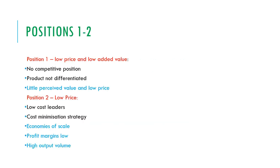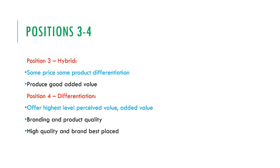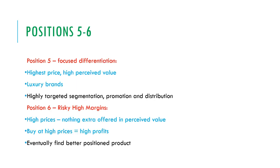In position 1, with no price premium and no added value, you're not in a competitive position — products are not differentiated, with low perceived value and low price. In position 2, low price, you'll be a low cost leader with a cost minimisation strategy, exploiting economies of scale, low profit margins, and high output volume. In position 3, hybrid, you'll have some price and product differentiation and produce a good added value product. In position 4, differentiation, you offer the highest level of perceived value and added value with strong brand and product quality. In position 5, focused differentiation, you offer the highest price with high perceived value, luxury branding, and highly targeted segmented products along with promotion and distribution.